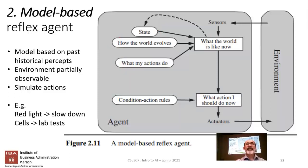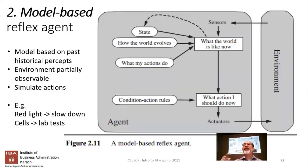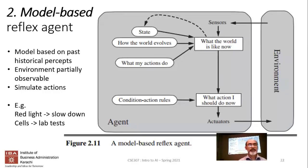Going back to the braking example: if you want to make a more complex agent, you'd want some kind of model of how the car moves before hitting the brakes — maybe it's too late and you just want to go straight. Similarly, if you're driving in Karachi and not bothering about red lights, a model-based agent would still need to account for environmental context.